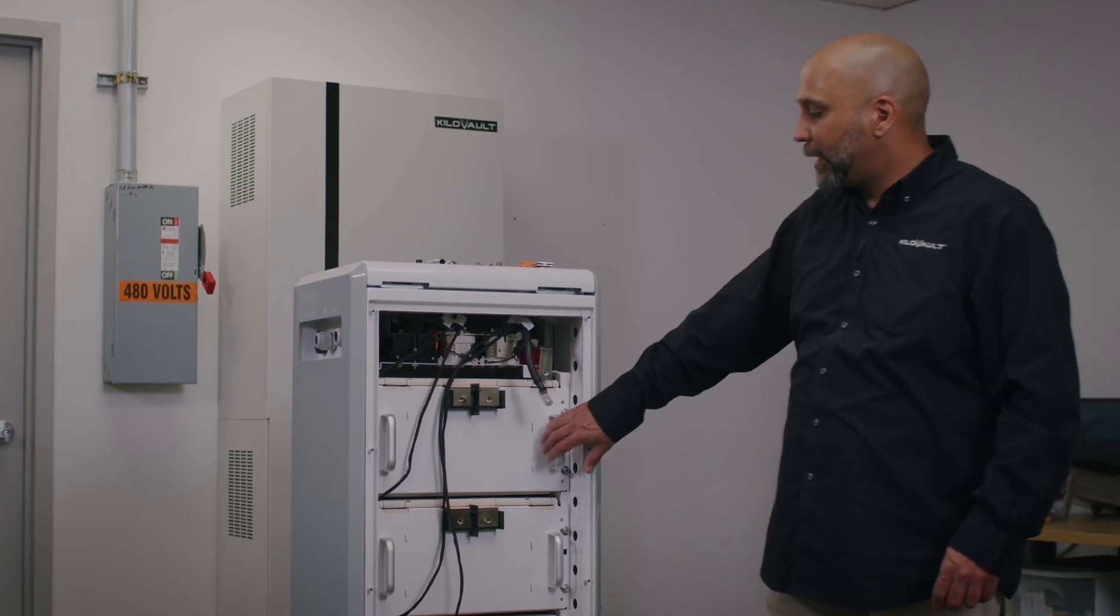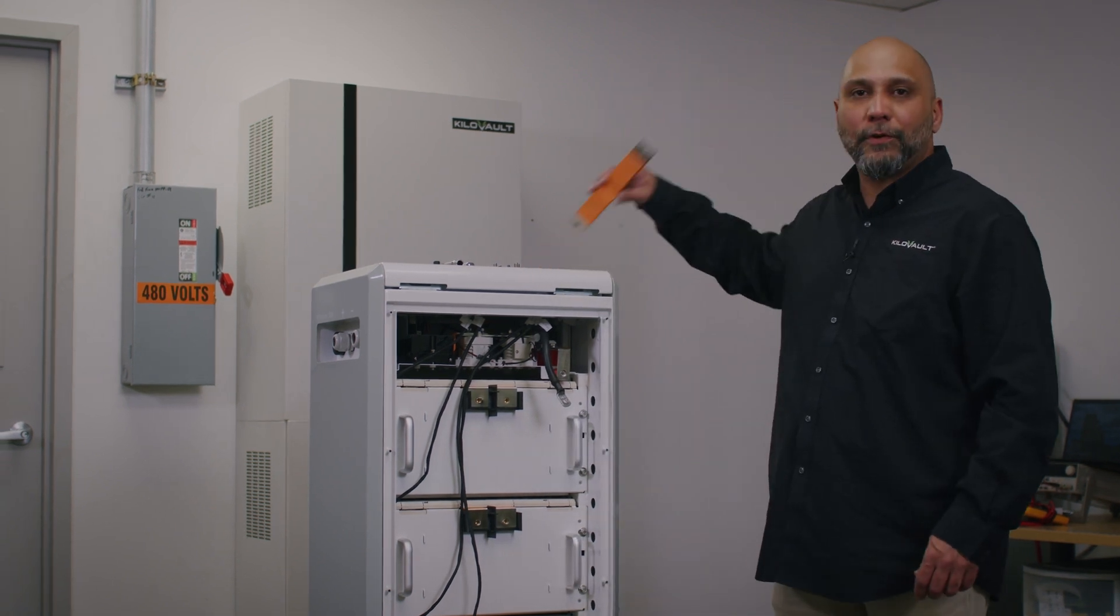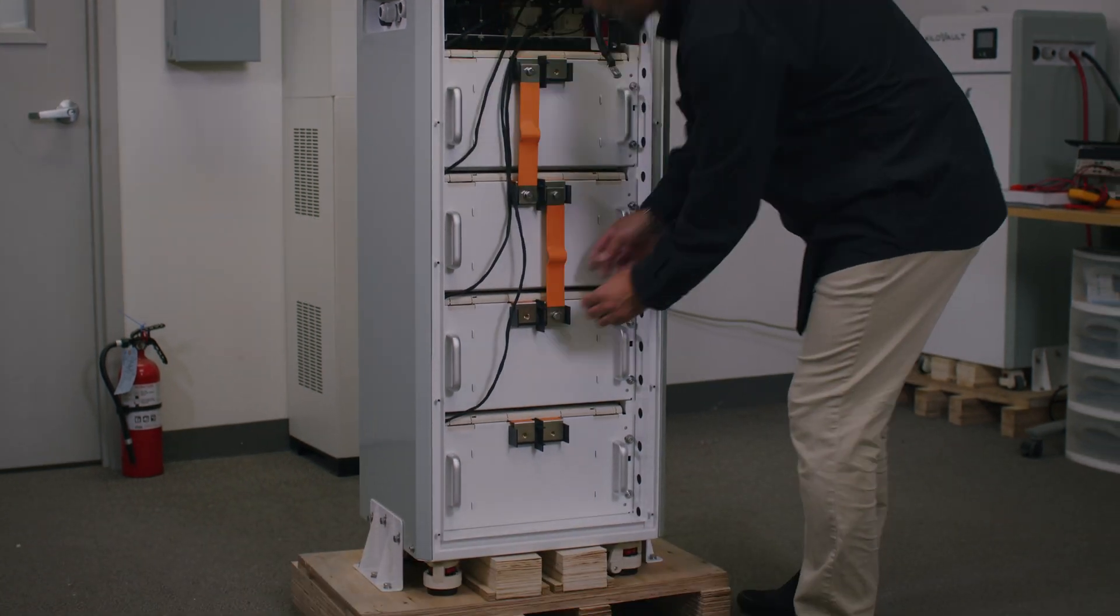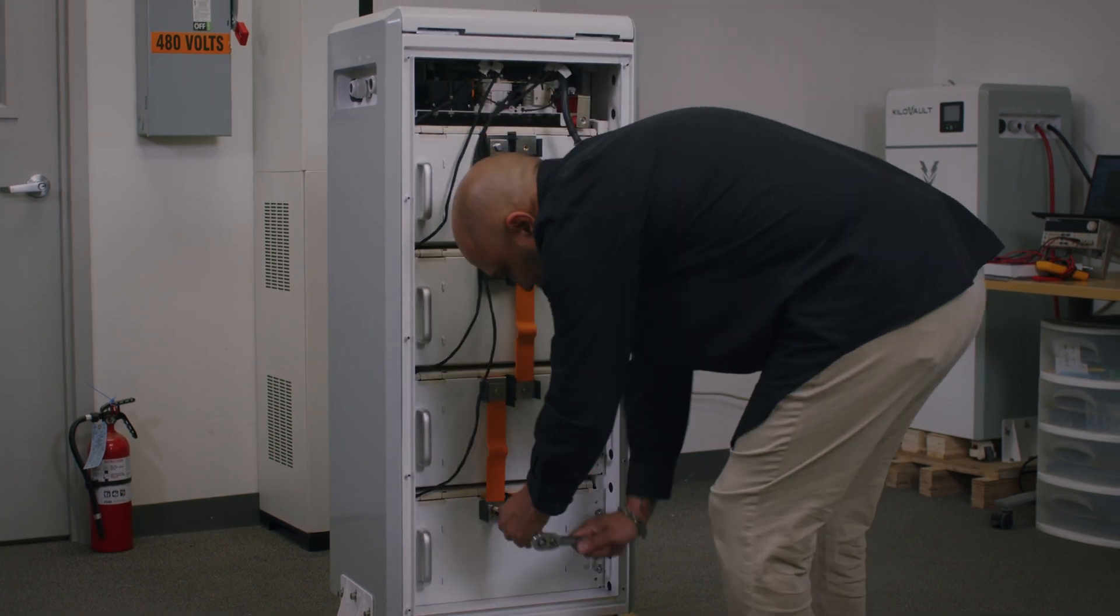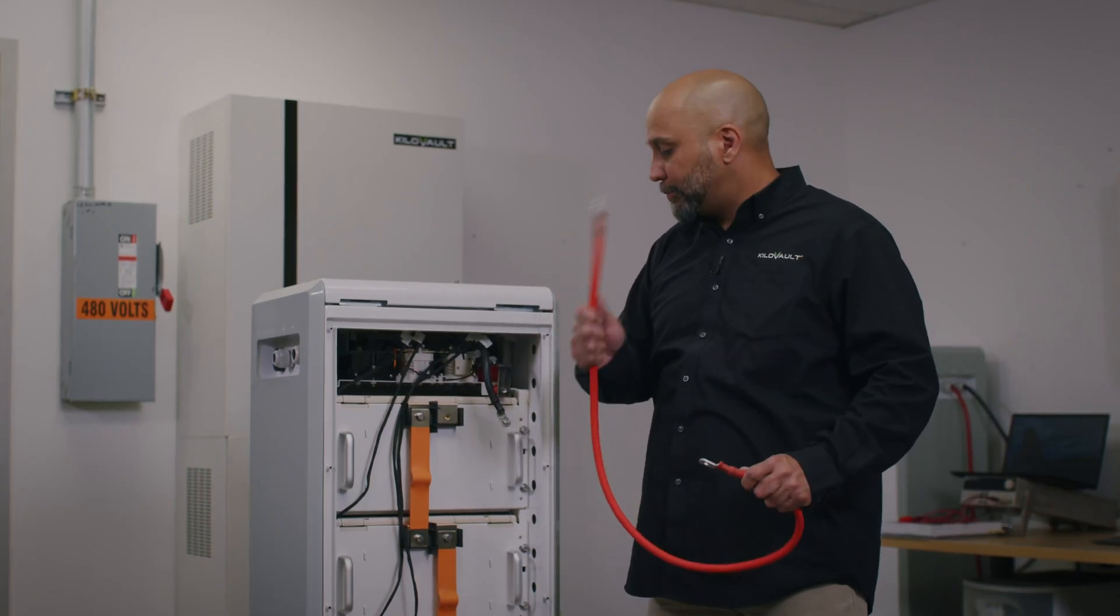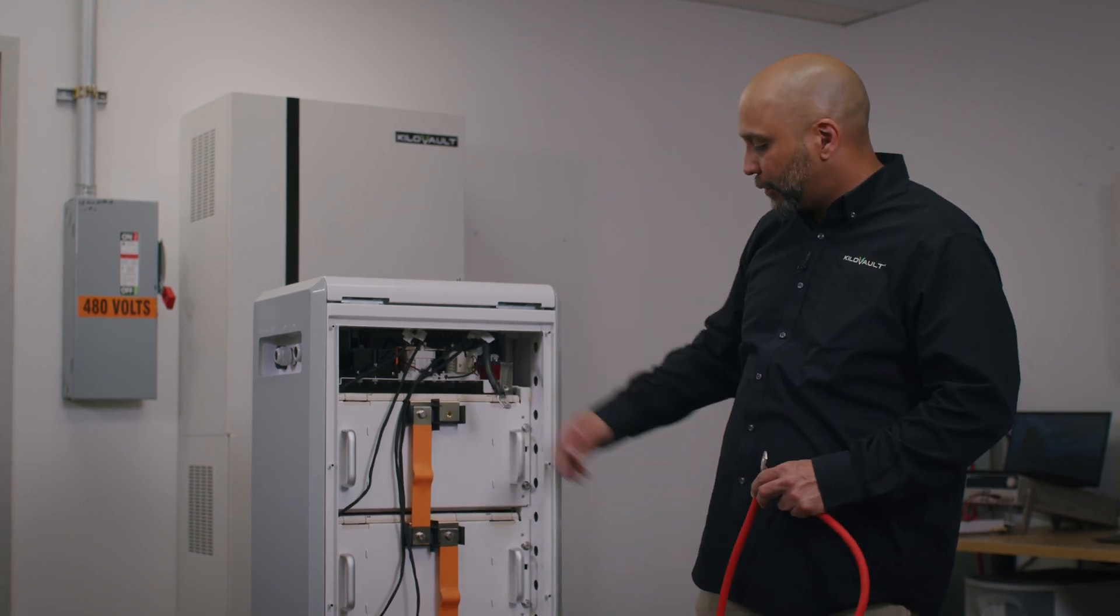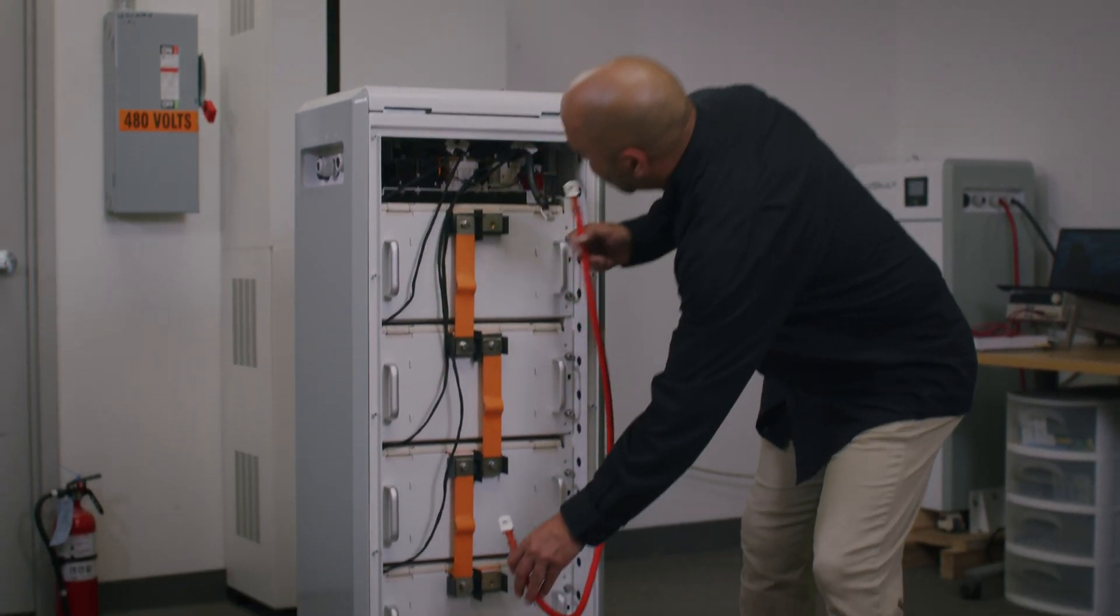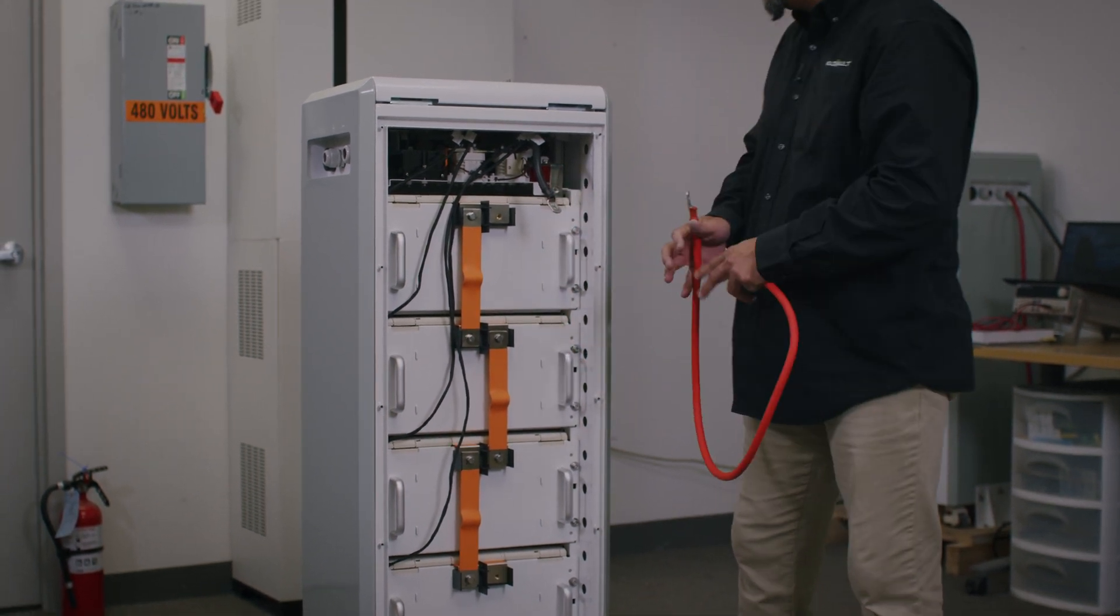Now that we've secured all the modules to the HABX cell enclosure, we're going to install the bus bars. Next is connecting the positive and negative cables back to the modules. The negative cable is here and your positive cable will be this long one coming from the bottom module to the top of the actual enclosure or unit.